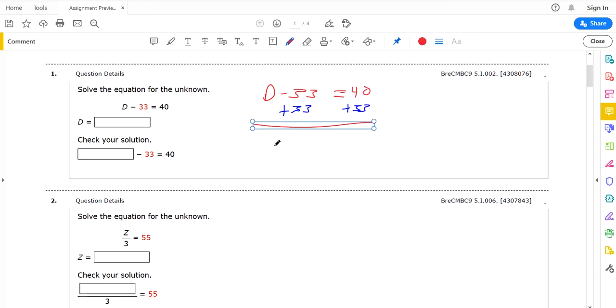So if you add 33 to both sides, you get D equals 40 plus 33 makes 73. And that's it. That's the answer for this question. That's what we have to plug in here for D.